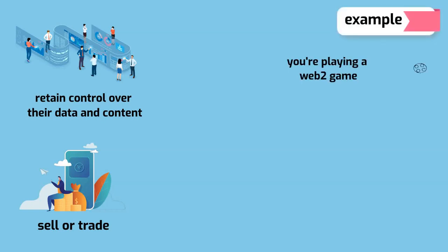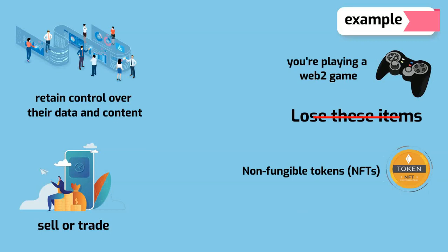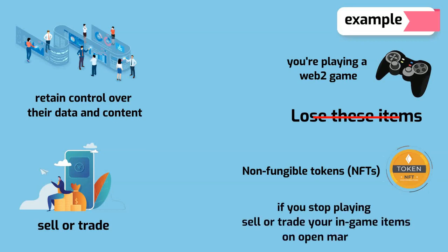For example, if you're playing a Web 2.0 game and you purchase an in-game item, it is tied directly to your account. If the game creators delete your account, you will lose these items. Web 3.0 allows for direct ownership through non-fungible tokens. No one, not even the game's creator, has the power to take away your ownership. And if you stop playing, you can sell or trade your in-game items on open markets.